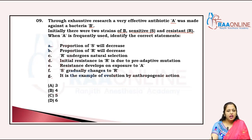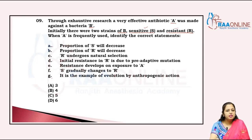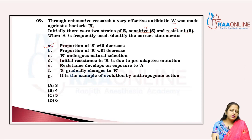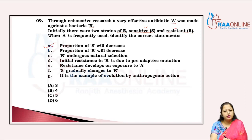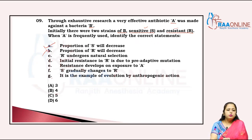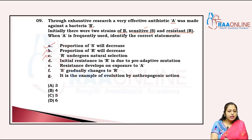When antibiotic A is frequently used, the proportion of sensitive bacteria S will decrease because the antibiotic kills them. The proportion of resistant R will not decrease because they are resistant. The statement that R undergoes natural selection is wrong. However, initial resistance in R is due to pre-adaptive mutation — that is correct.